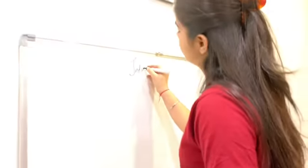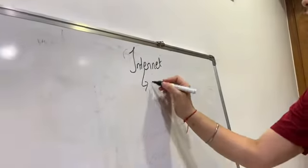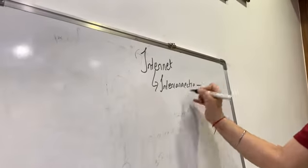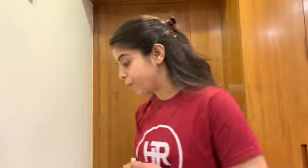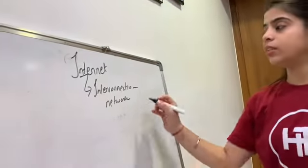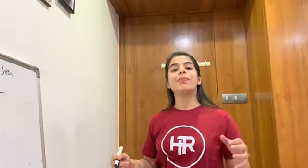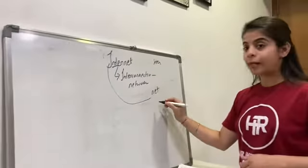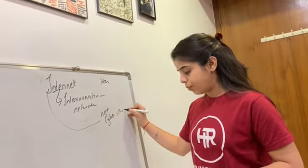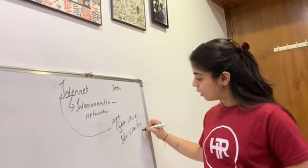The next topic is the Internet. The word 'internet' is derived from two words: interconnection and network. The word 'inter' refers to internal and 'net' refers to network. So the internet means internal network. The internet is the largest computer-operated system in the world. It is also known by other names such as information superhighway and cyberspace.